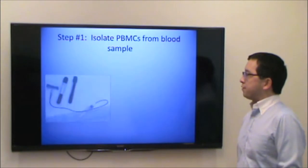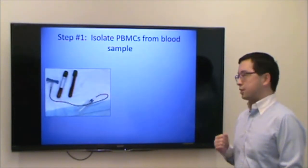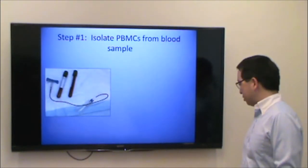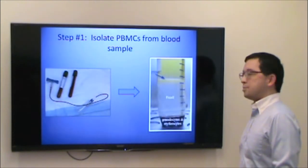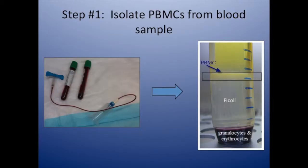The first step after you collect blood from a patient is to separate out the PBMC layer, shown here. You can use a substance called FICL, which separates out the erythrocytes and granulocytes from the PBMC layer that contains your lymphocytes that you're interested in.